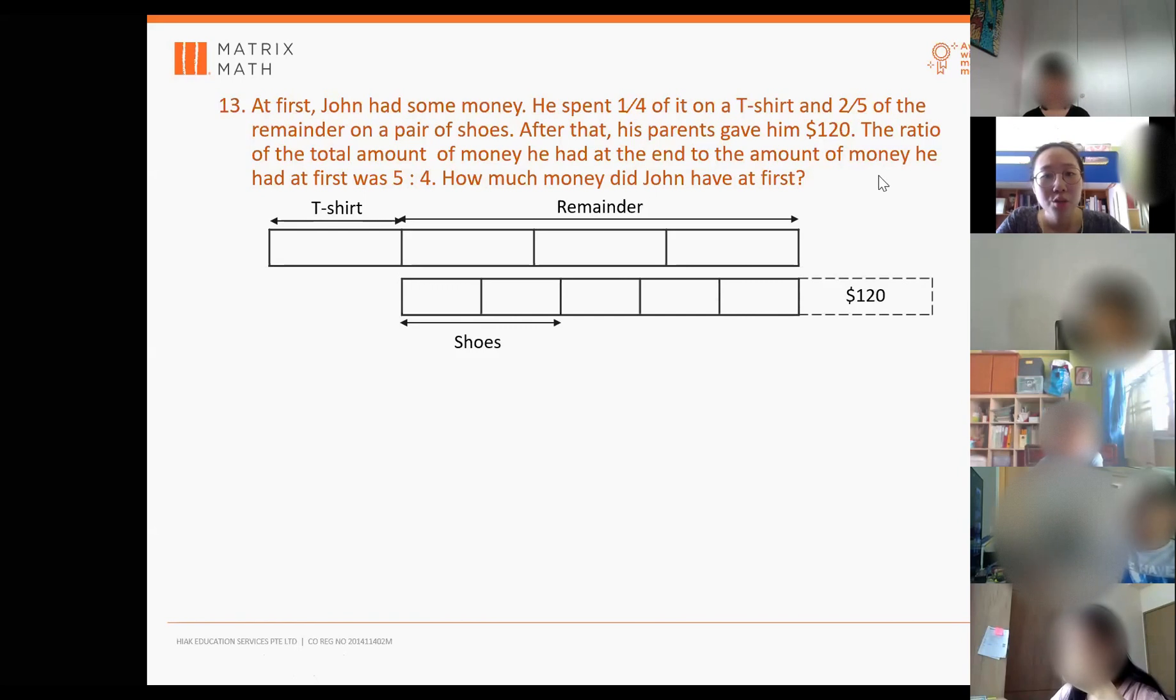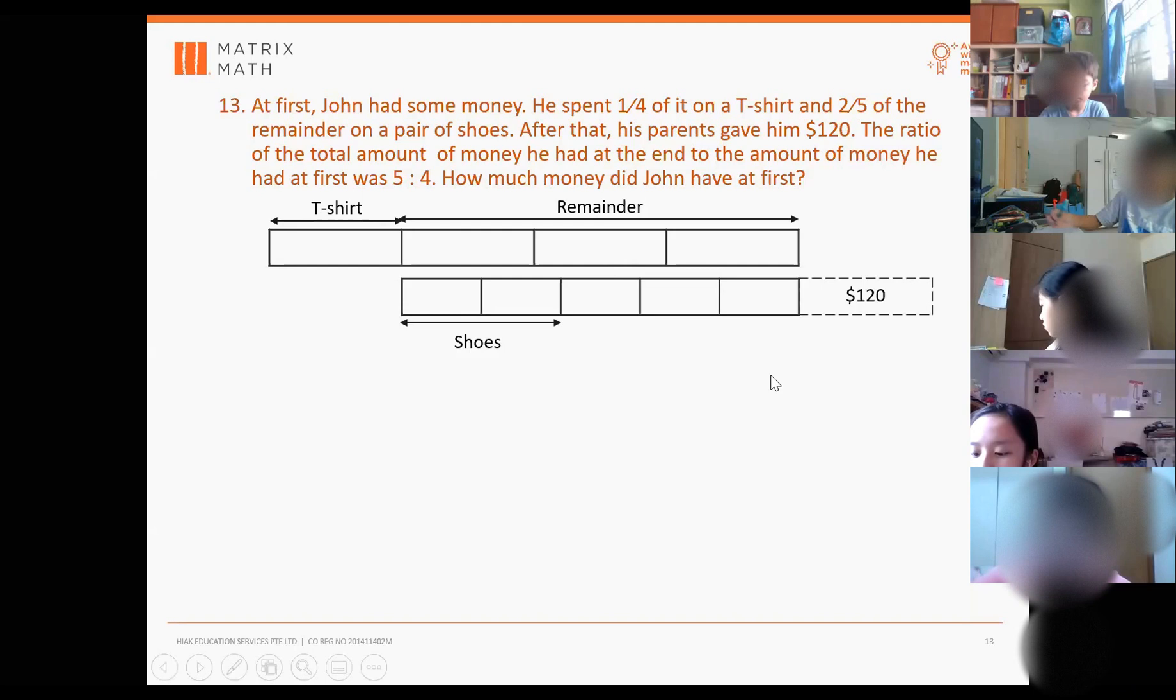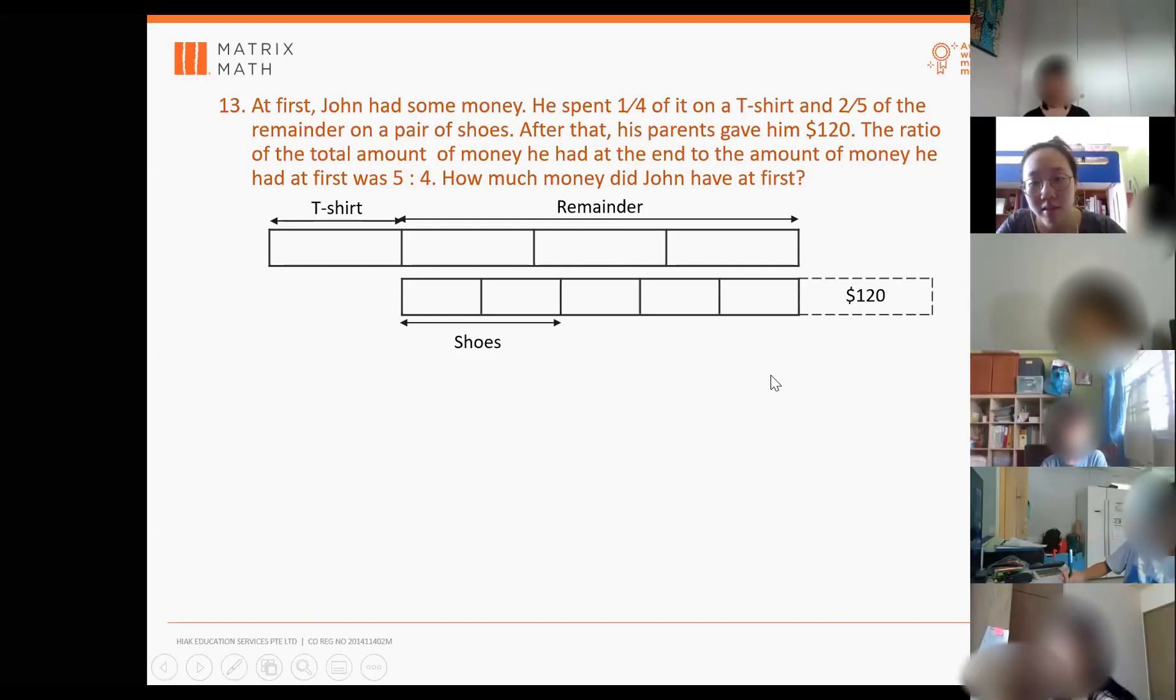Just draw an extra $120 behind this model here. So it might look funny up to this point but don't worry, you're on the right track. So then they say the ratio of the total amount of money he had at the end to the amount of money he had at first was 5 is to 4. But the thing is, the 5 units in the ratio and the model 5 units aren't the same.